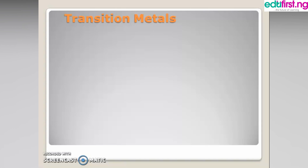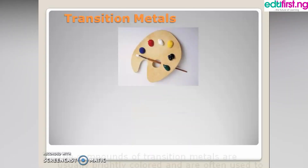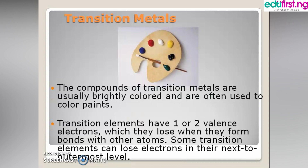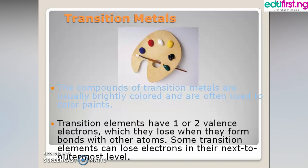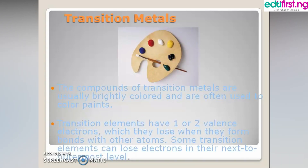Another property of transition metals is that they are brightly colored — they are colorful and are used as color paints. They have one or two valence electrons, but located in the 3d shell, which is the second to the last shell.